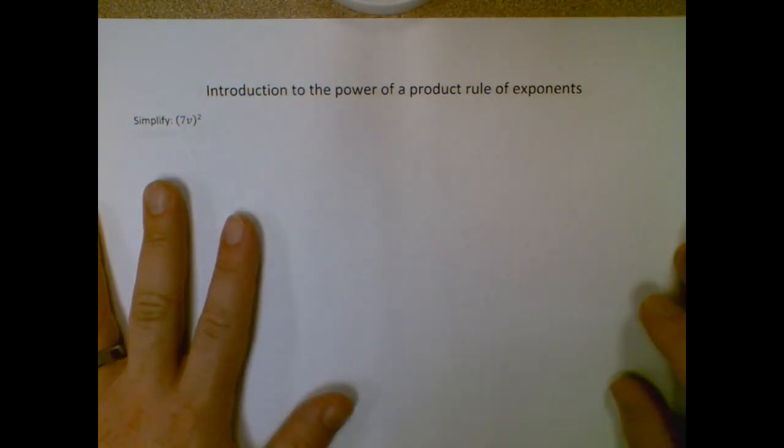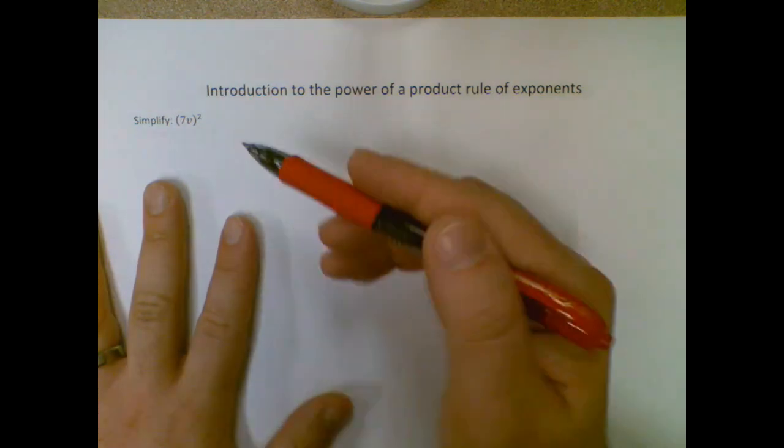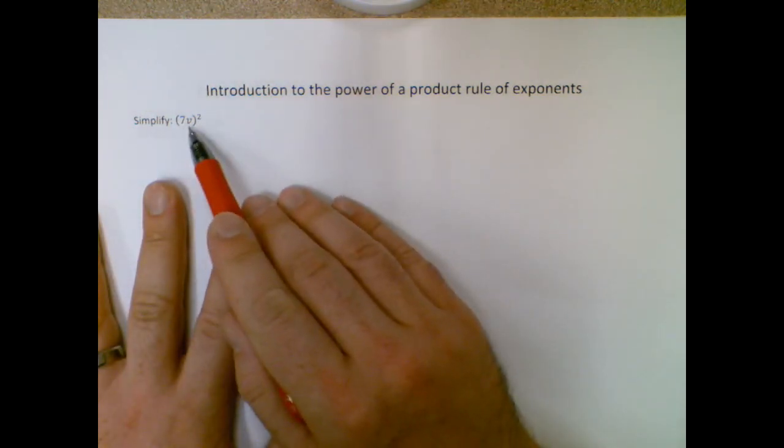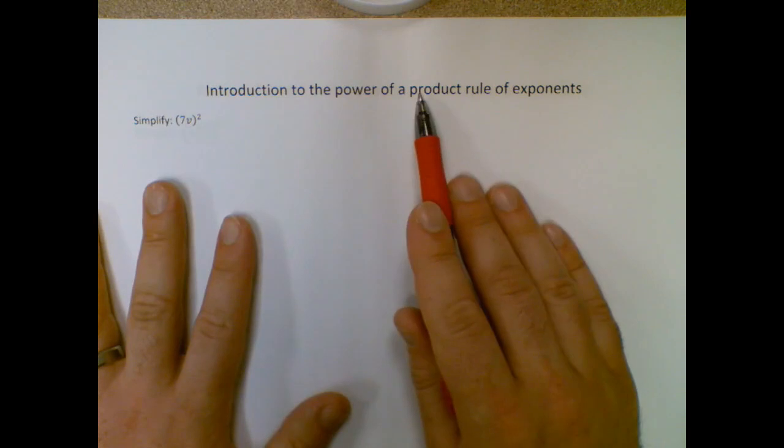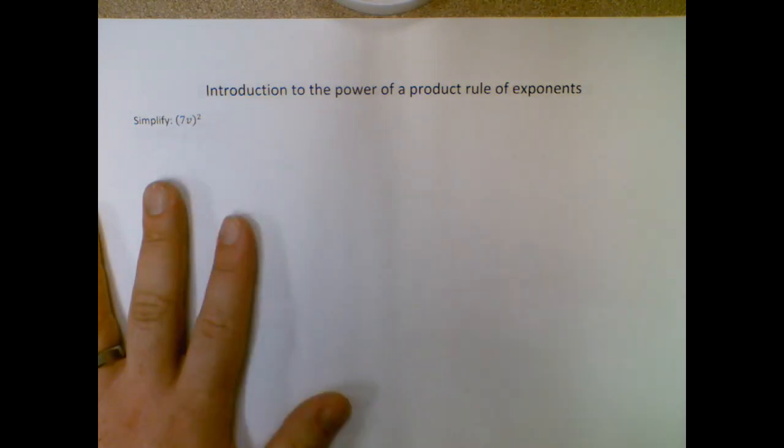So this is basically combining a couple things together. What we're looking at here is using a quantity that is multiplied together to a power, which is where that power of a product multiplication part comes in.